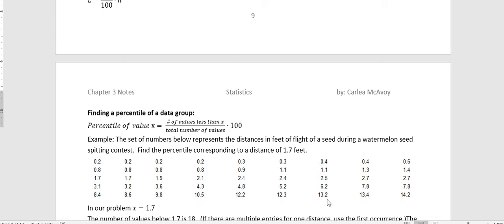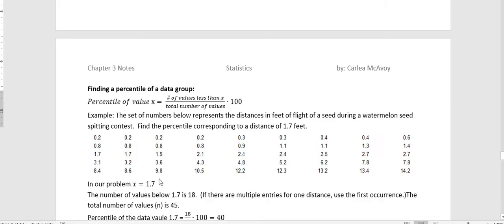So we have 0.2 feet all the way up to 14.2 feet. And in our problem, we're looking for 1.7. So that's our X. And so what we want to do is figure out how many values are there below 1.7. So you can see that there are multiple entries for 1.7. So when you're looking at this, you want to think about the values that are below the very first one that occurs.